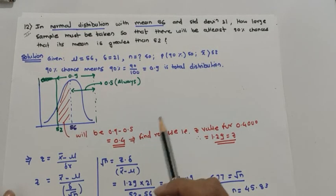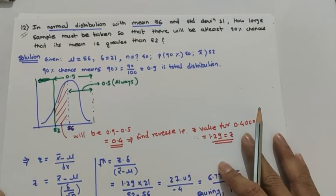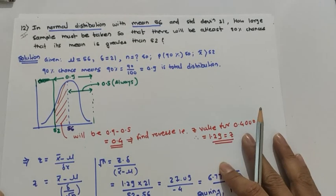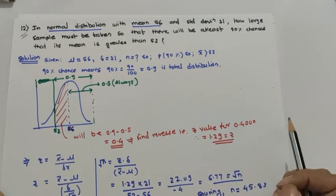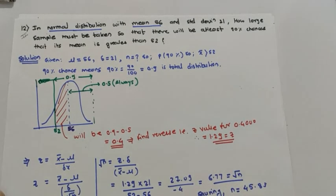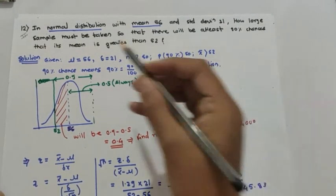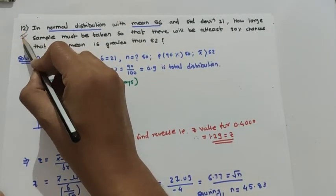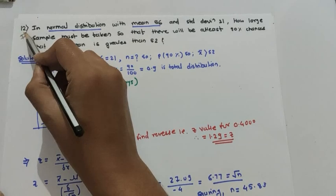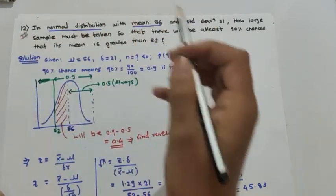Hello friends, this is the third part of your video on sampling methods for advanced management, which will be business mathematics. This is the 12th problem, which is an unsolved problem in your Macmillan book.